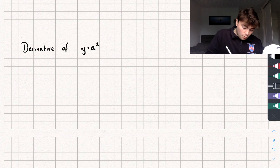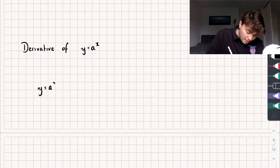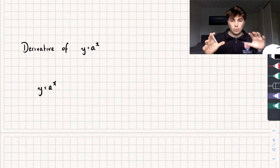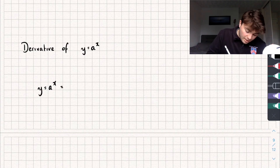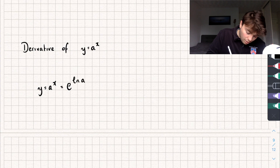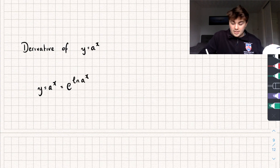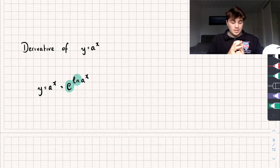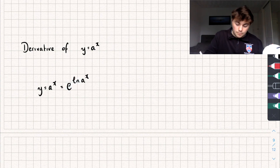To do this, we're going to rewrite y equals a to the x using the fact that e and the natural log are inverses of each other. So we can say that a to the x is actually equal to e to the power of the natural log of a to the x. Because these are inverses, they cancel each other out, and so they're the same thing.